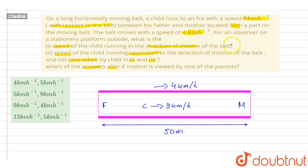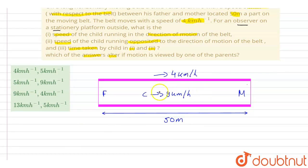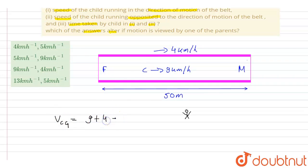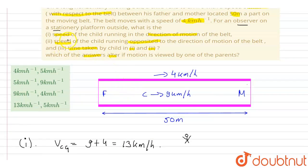Now we have to determine the speed of the child running in the direction of motion of the belt, from the context of an observer on a stationary platform. This means we determine velocity relative to the ground. A stationary observer on the ground sees the belt moving at 4 km/h, and when the child runs along the belt's motion, his own velocity is 9 km/h. These two velocities add up, so velocity of child with respect to ground equals 9 plus 4, which is 13 km/h.